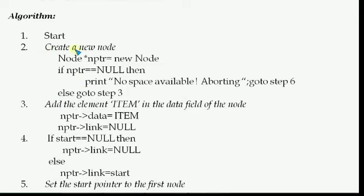Now see from step 2 of the algorithm. Create a node: 'node* nptr = new node'. We use the 'new' operator in C++ to initialize a pointer dynamically. 'new' is an operator (not a keyword). In C programming, the task we do with the malloc function, here we do with the new operator.